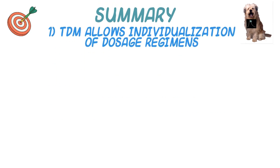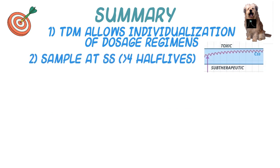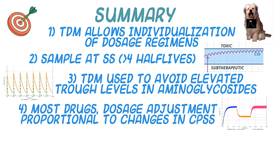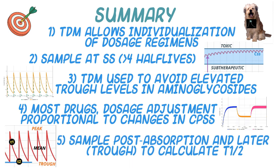In summary, therapeutic drug monitoring allows individualization of dosage regimens, which is particularly important with potentially toxic drugs but also important to avoid lack of efficacy. Sampling is best performed at least four half-lives after initiation of therapy. When monitoring aminoglycosides, the trough sample is key to ensure it is not elevated, as elevation is associated with nephrotoxicity. For drugs without significant peak-to-trough consequences, target the mean plasma concentration at steady state. For drugs with significant peak-to-trough fluctuation, refine dosage and/or interval by sampling at two time points — one right after absorption is complete and one at the trough — allowing calculation of the half-life in the specific patient.